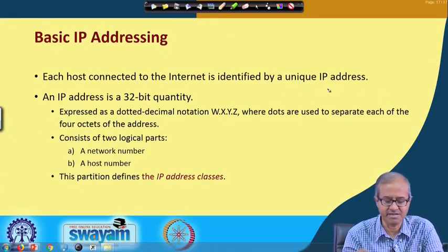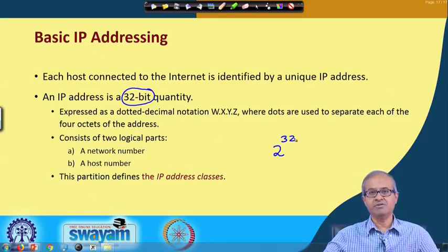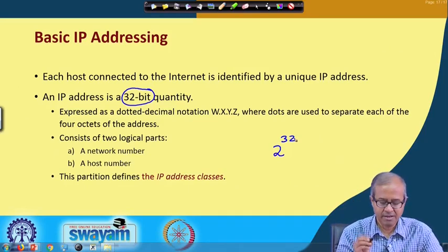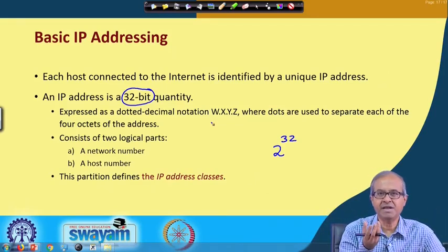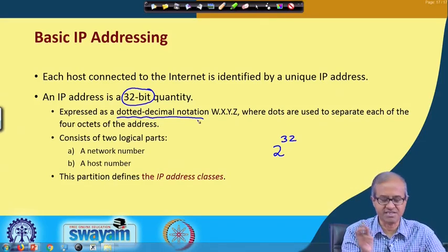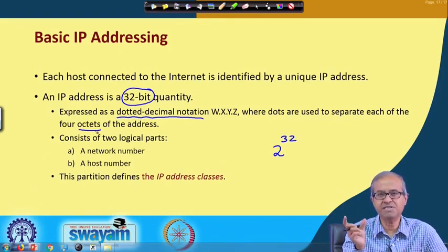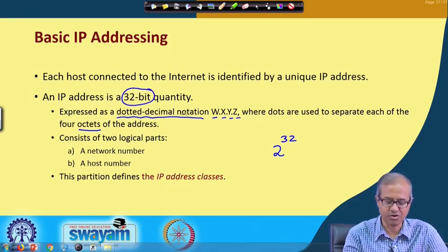The way an IP address is defined, it is a 32-bit quantity. You can have 2 to the power 32 different unique addresses, which is about 4 billion. To make it a little concise, there is something called dotted decimal notation, where you divide the 32 bits into 4 bytes called octets. Each of these 8-bit quantities you express in decimal, and you write them as decimal numbers W, X, Y, Z separated by dots. This is called the dotted decimal notation.